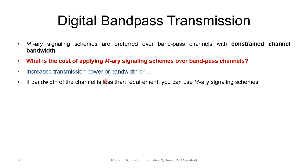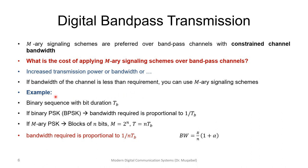In digital band-pass transmission, M-ary signaling schemes are preferred over band-pass channels with constrained bandwidth. If you want to increase the data rate but are limited by bandwidth, you need new symbols that don't require additional bandwidth. So if your channel has limited bandwidth, we are usually forced to use M-ary signaling to increase the data rate.